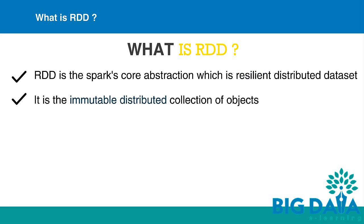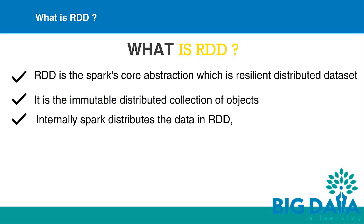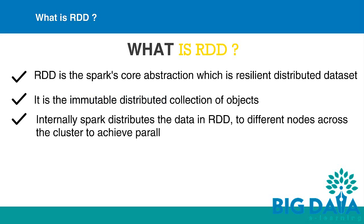RDD is an immutable distributed collection of objects. RDD is immutable because it cannot be modified. RDD is distributed in the sense that it is distributed to different nodes across the cluster.